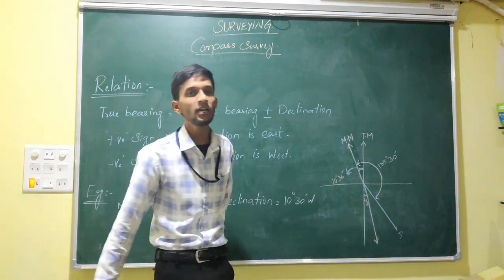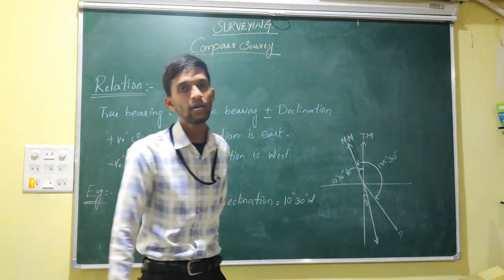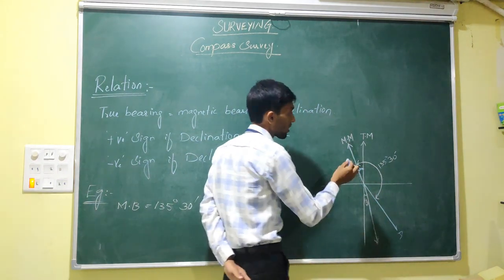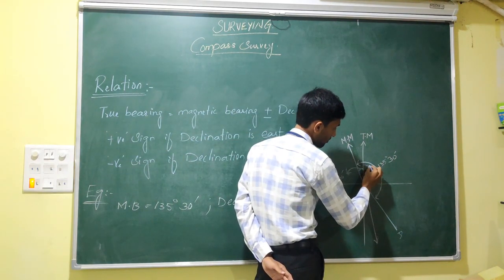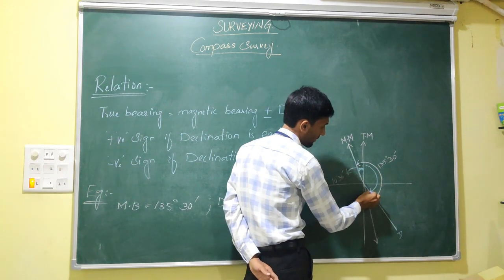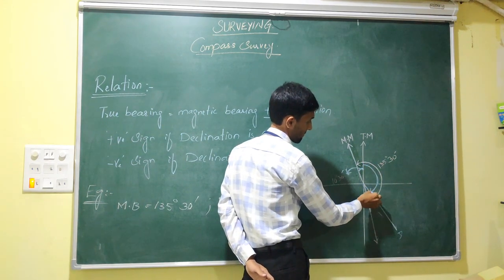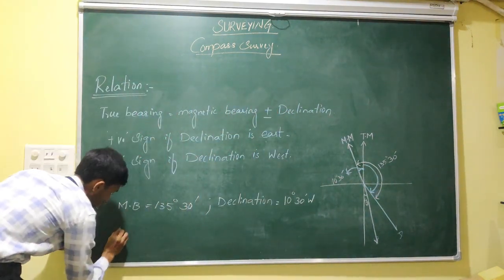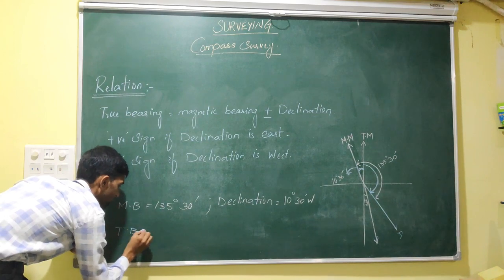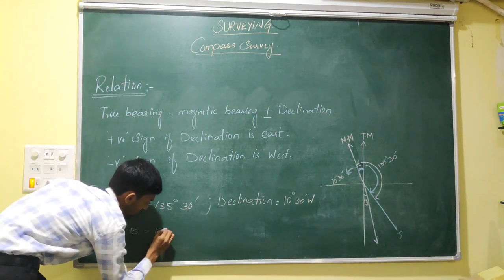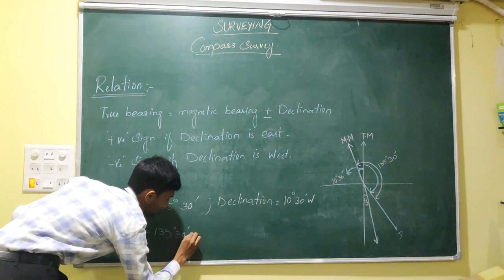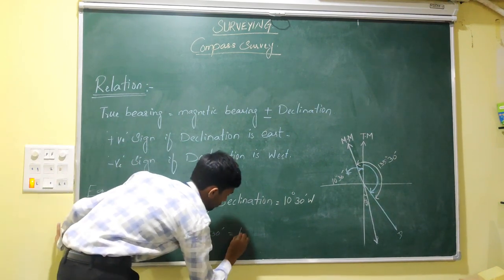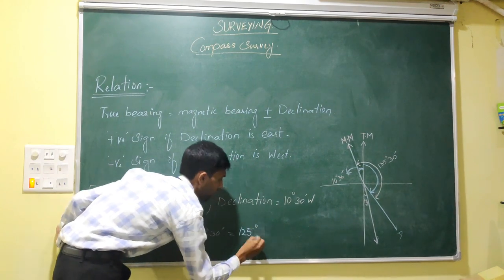By seeing the figure, we can determine that we have to subtract the declination value. So, true bearing equals 135 degrees 30 minutes minus 10 degrees 30 minutes, which equals 125 degrees. That is our true bearing.